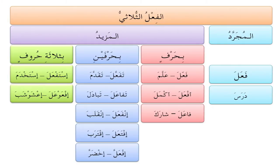أفعَلَ — like أكمَلَ — where the alif with hamza is the additional element. فاعَلَ — the alif after the fa' is additional, like in شارَكَ. These are examples of المزيد بحرف واحد.